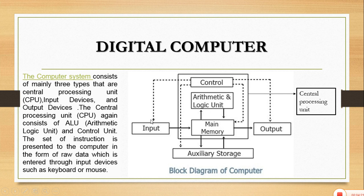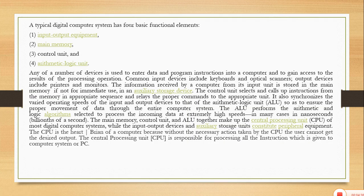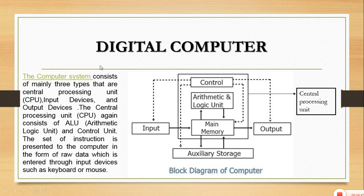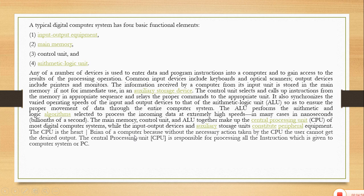When raw data or instructions are entered into the computer using an input device, it is saved inside the main memory. After being saved, the data is processed according to the instructions of the user, and the control unit instructs the arithmetic and logic unit to process that data. After completion of the process, the computer formulates the result and gives it to the user either by the monitor or by the printer.